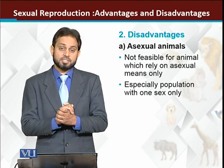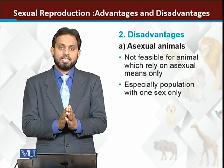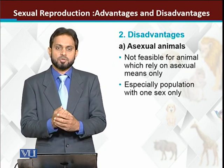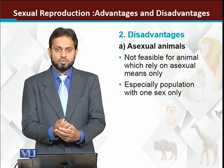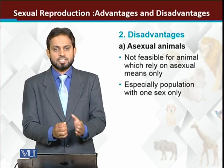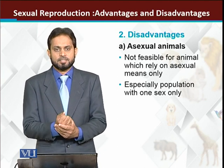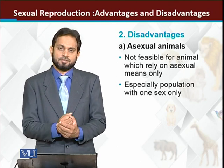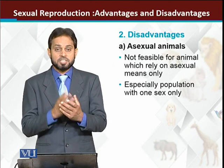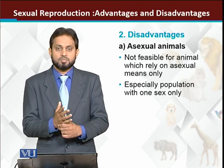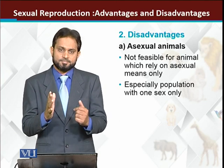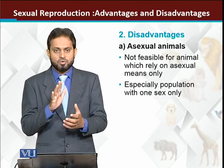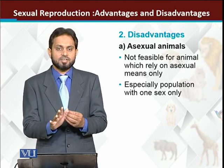The disadvantages of sexual reproduction: first, asexual animals cannot survive if there is only sexual reproduction. For example, there are 6 species of lizards where only females exist — there are no males. If only one sex exists, the population or species will go extinct. They only survive due to asexual reproduction, so these animals cannot take the sexual reproduction option.